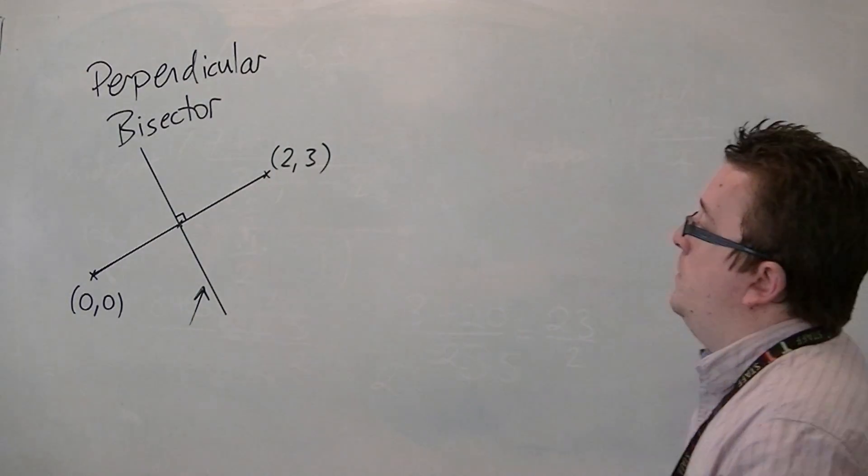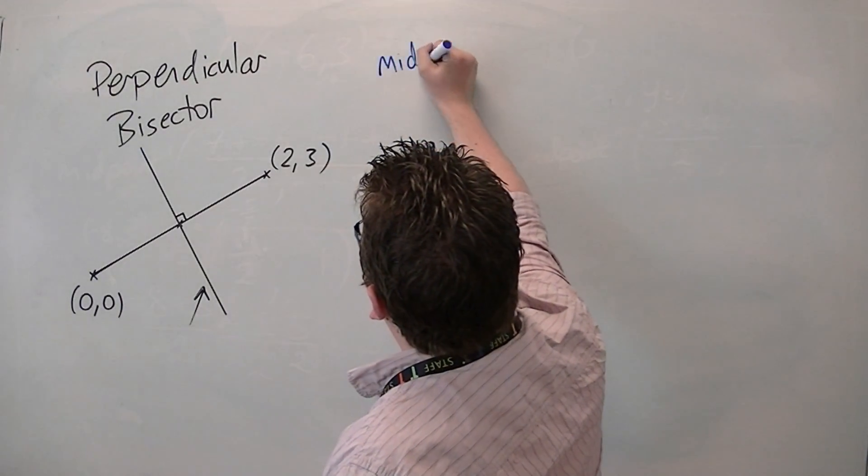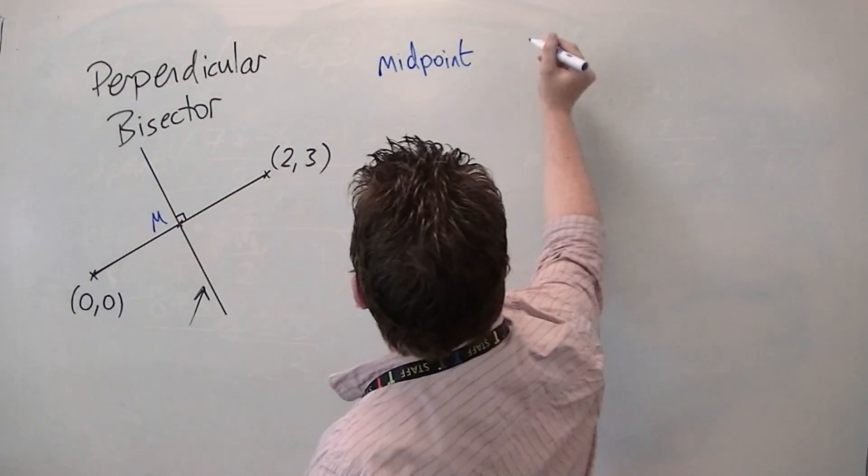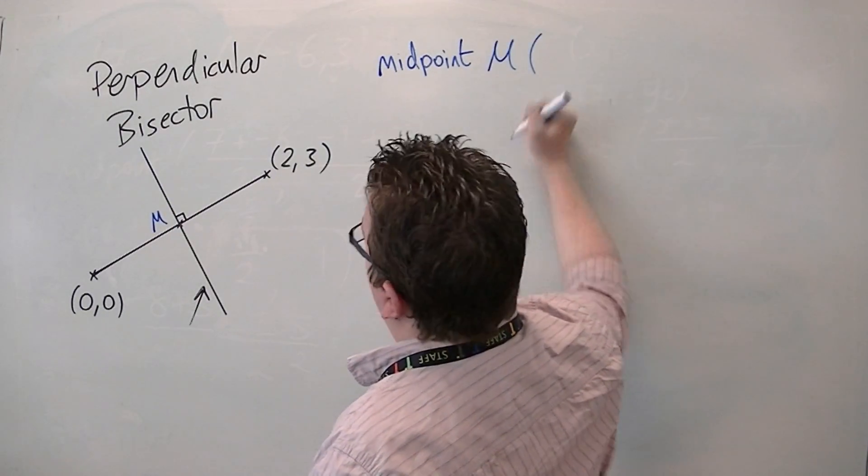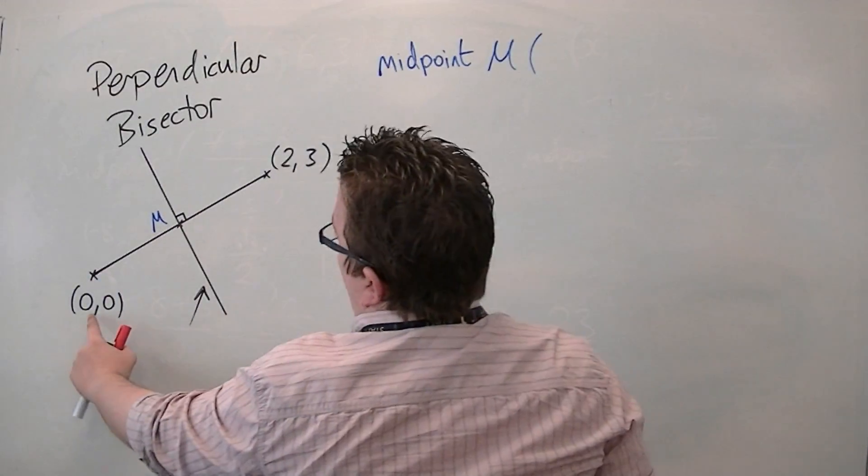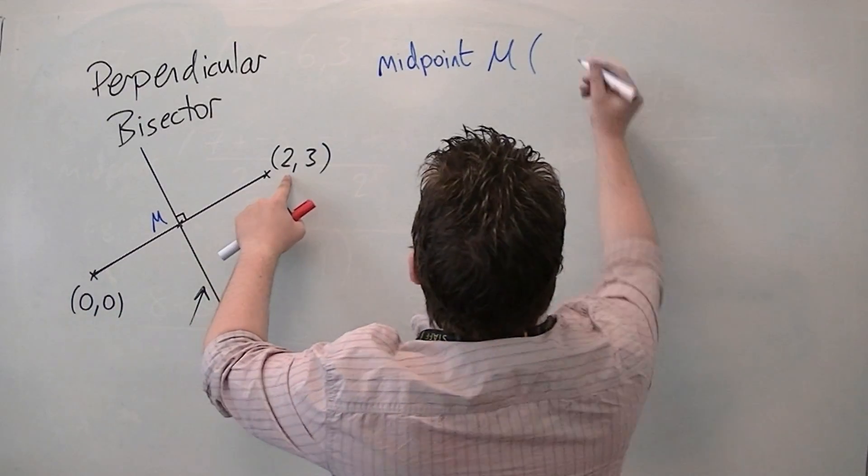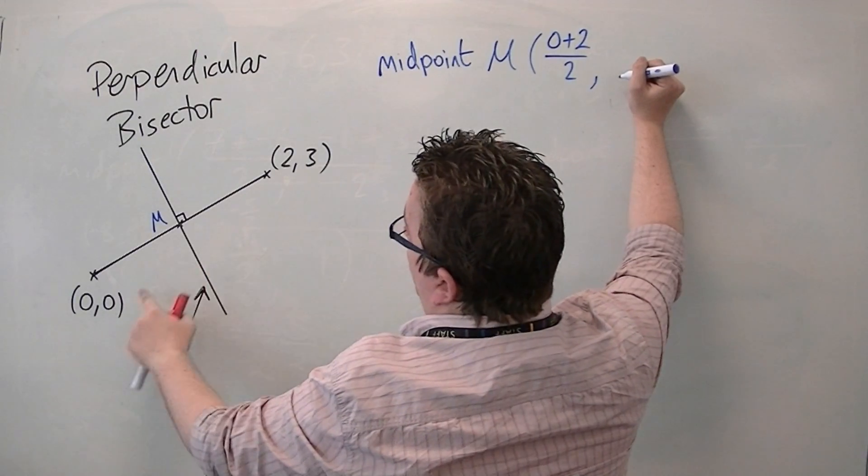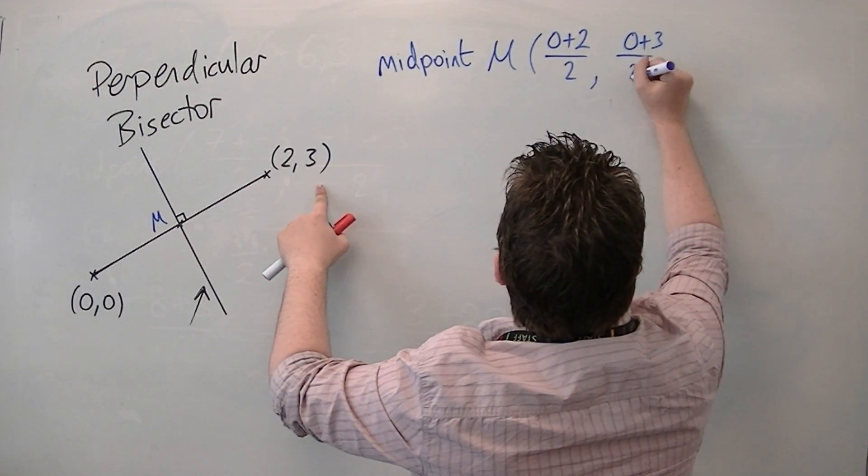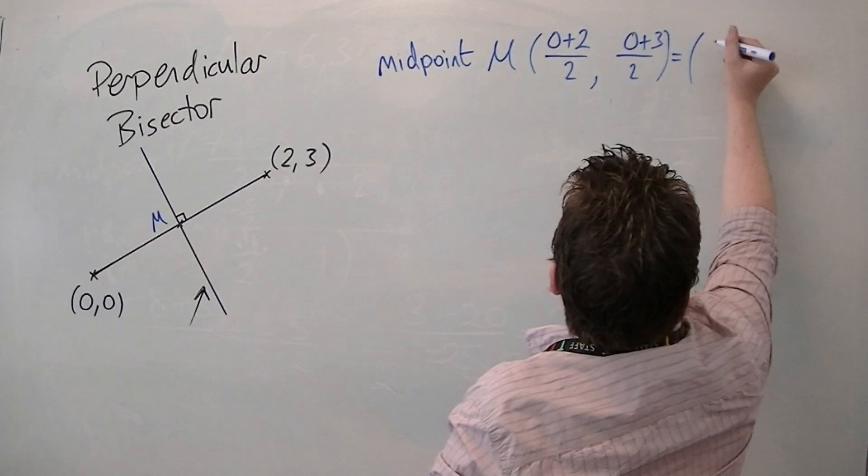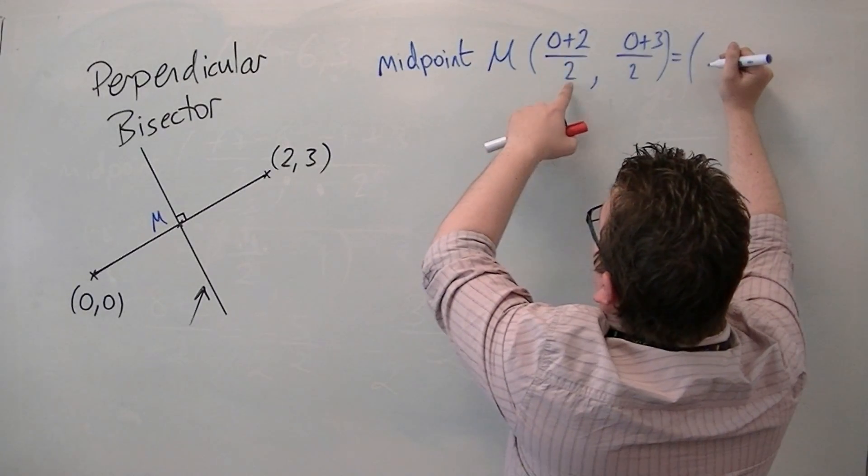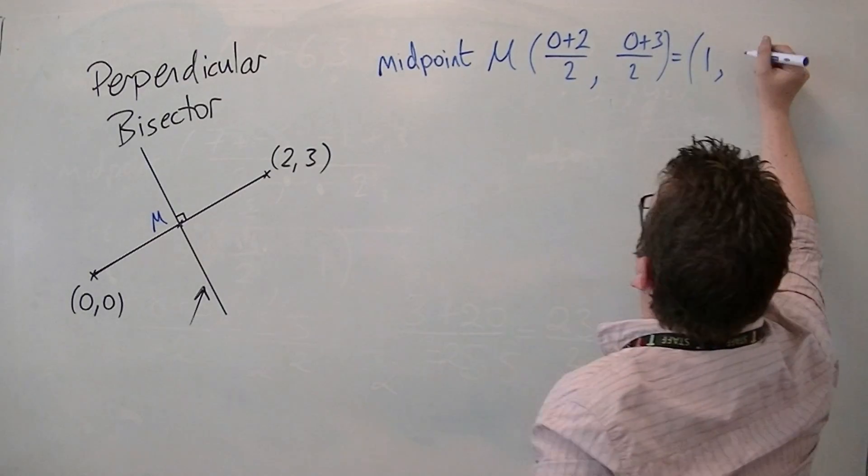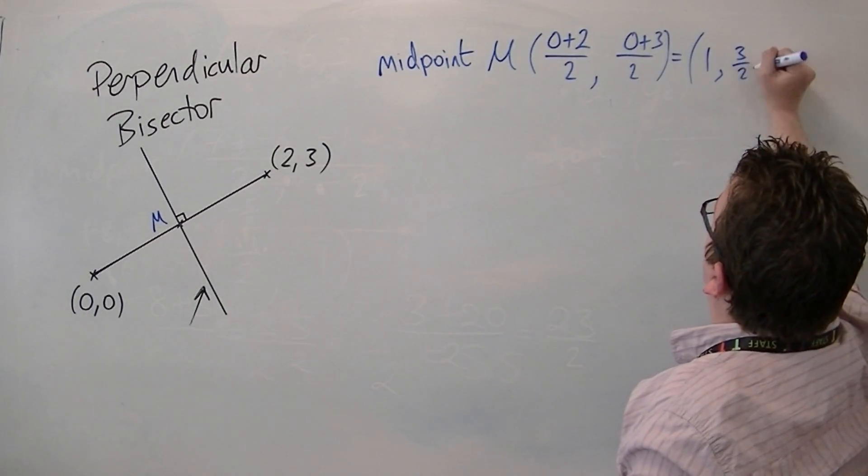So, the midpoint, let's call this point M, has the coordinates where we have 0 plus 2 over 2, and 0 plus 3 over 2. So, it has the coordinates, 0 plus 2 is 2, over 2 is 1, and 0 plus 3 over 2 is 1.5, or I'm going to write it as three halves.